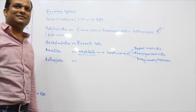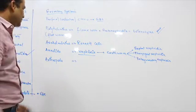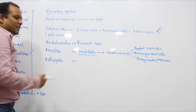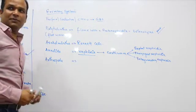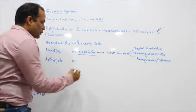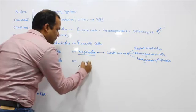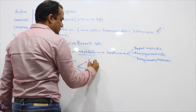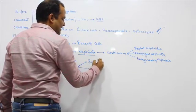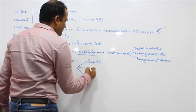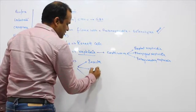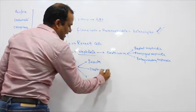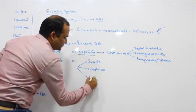The fourth function of the kidney is the formation of the active form of vitamin D. Now in Arthropoda there are three classes to consider: Insecta, Crustacean, and Arachnida.